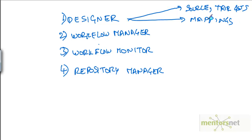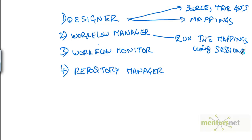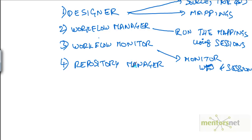A mapping is basically a pictorial way of showing the source, the different transformations applied on the source data, and finally the target. We run the mappings using sessions, and we monitor the progress of the sessions and workflows in Workflow Monitor. Repository Manager is mainly for administration activities like creating permissions on folders for users.